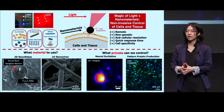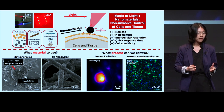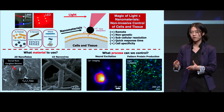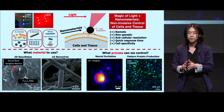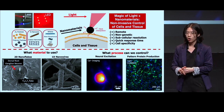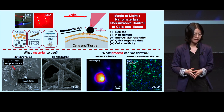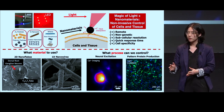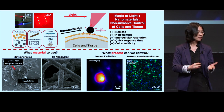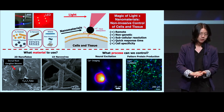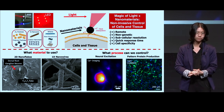But unfortunately, neurological disorder is a very severe issue. It consists of 7% of total global disability. The disorders include Parkinson's disease, depressive disorder, and spinal cord injury.